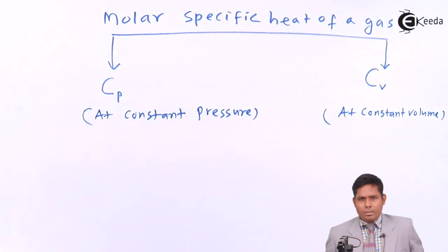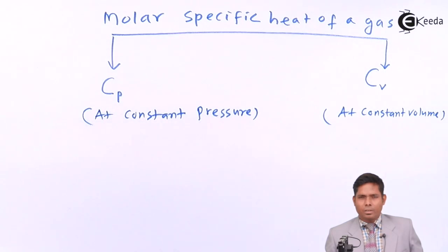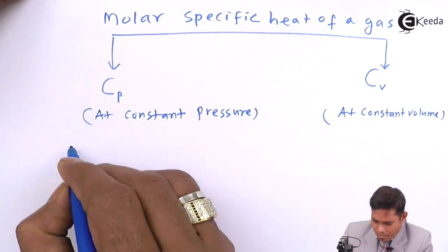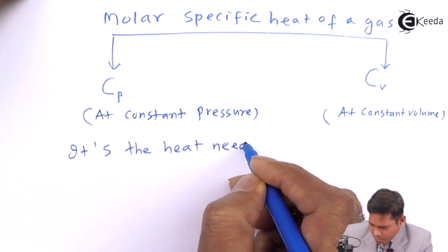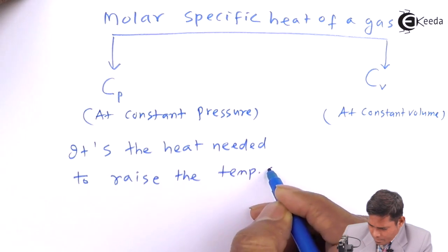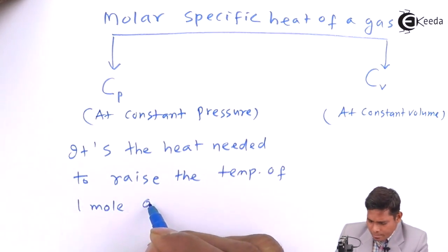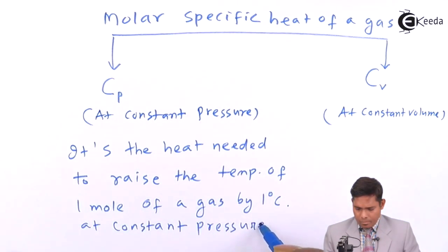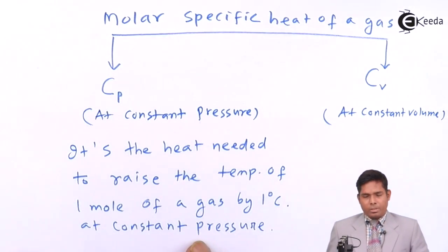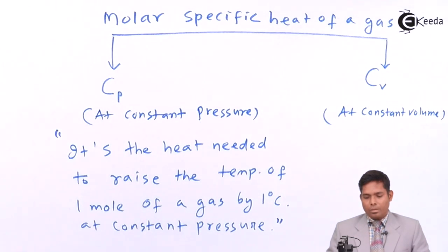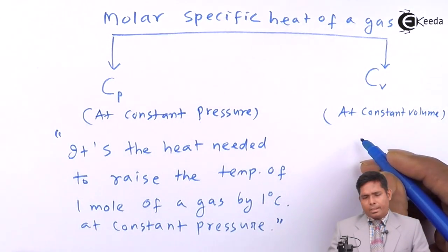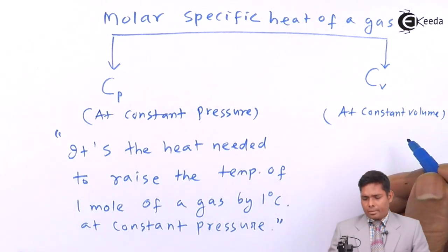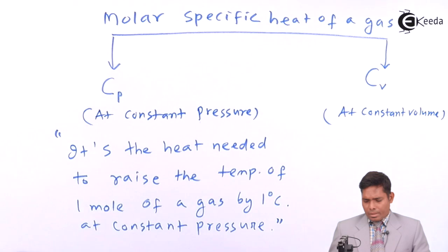Molar specific heat means you take one mole of gas, heat it at constant pressure, and keep heating until the temperature increases by one degree centigrade. The heat that you supply is called the molar specific heat of that gas at constant pressure. Similarly, specific heat at constant volume is defined the same way but with volume kept constant instead of pressure.